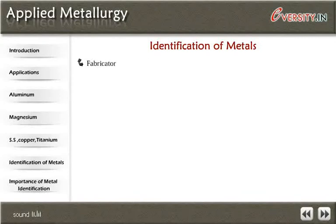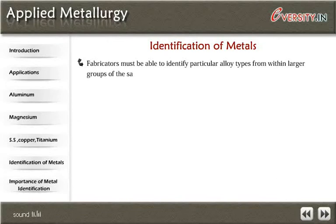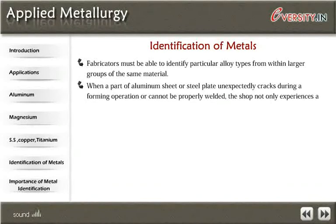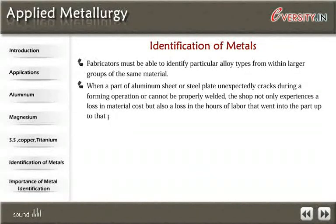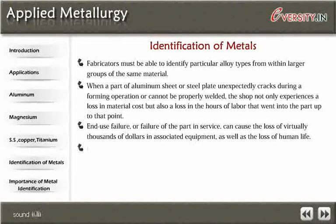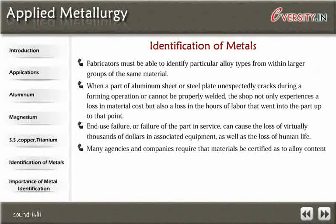Identification of Metals: Fabricators must be able to identify particular alloy types from within larger groups of the same material. When a part of aluminum sheet or steel plate unexpectedly cracks during a forming operation or cannot be properly welded, the shop not only experiences a loss in material cost but also a loss in the hours of labor that went into the part up to that point. End-use failure, or failure of the part in service, can cause the loss of virtually thousands of dollars in associated equipment, as well as the loss of human life. Many agencies and companies require that materials be certified as to alloy content and analysis.